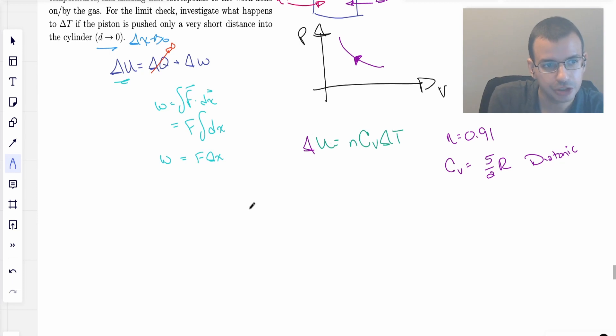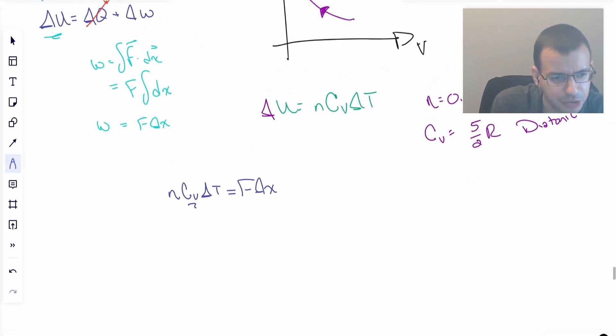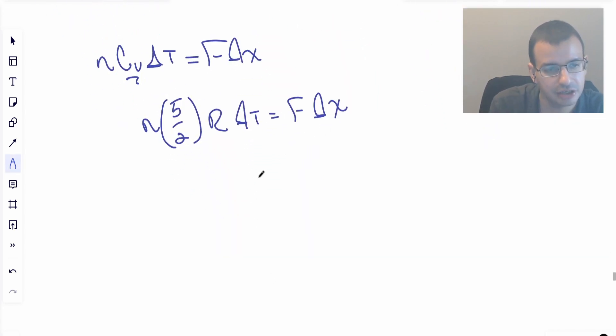Now we're just going to put it all together. Delta U equals N CV delta T, which is what we're trying to find, equals F delta X. I'm going to rewrite CV once: we get N times five halves R delta T equals F delta X. Rearranging for delta T, we get delta T equals F delta X times two fifths divided by NR.